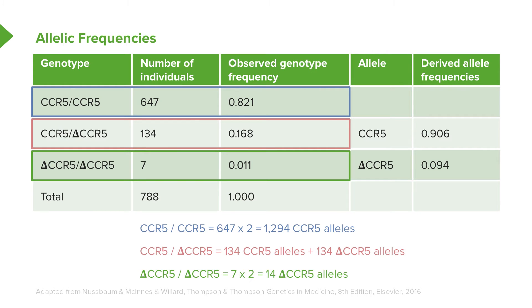Moving on to the third genotype option, which is the protective form, where we have the mutant CCR5 at both loci. We multiply the number of individuals by two, because both alleles are the same allele, and we end up with 14 mutant CCR5 alleles from the homozygous mutant form.